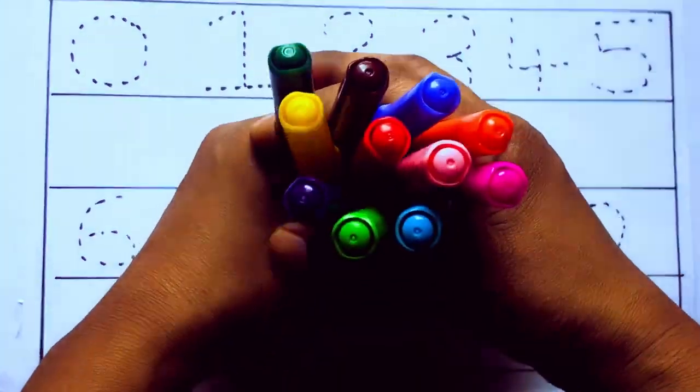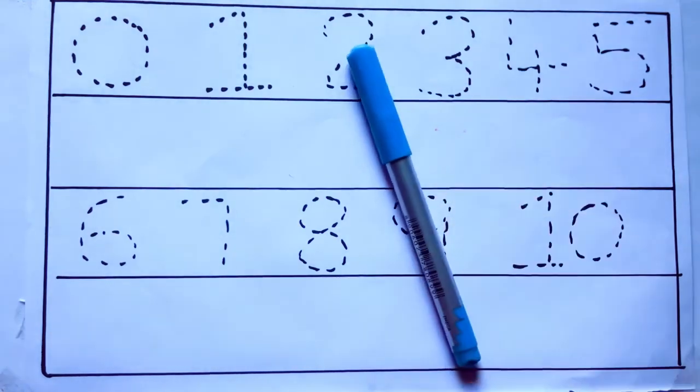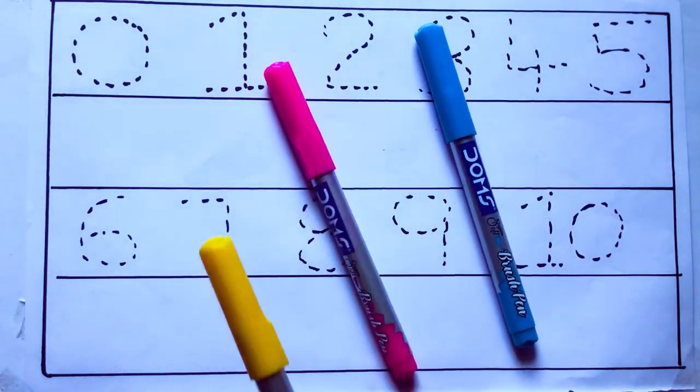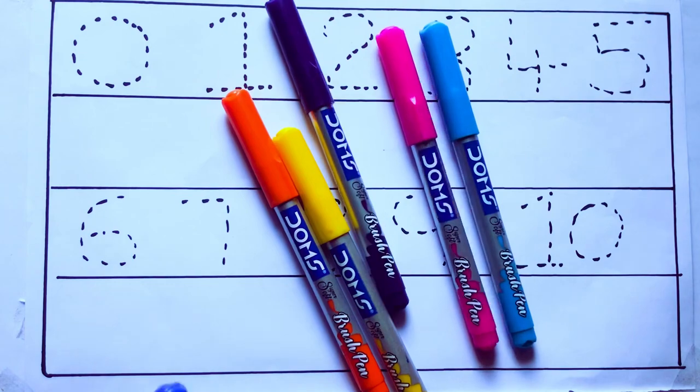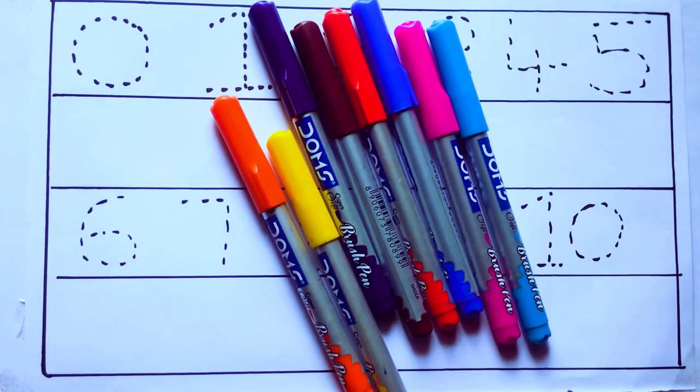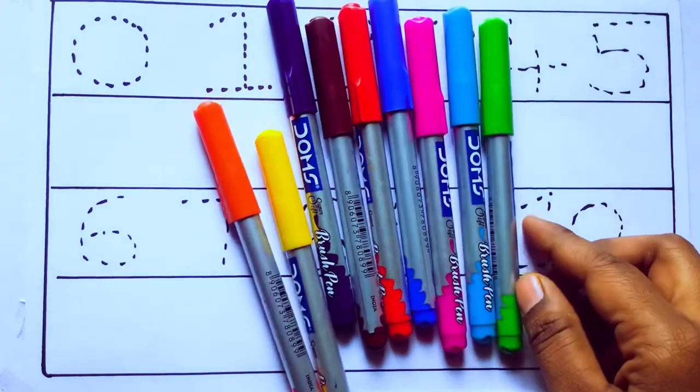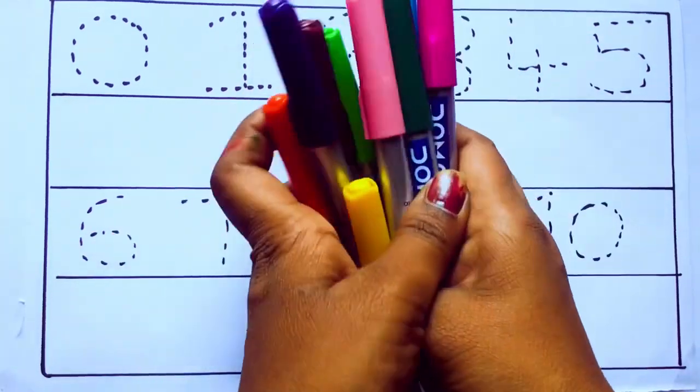Let's learn some colors. These are all the color pencils. Let's learn the names. Sky blue color, pink color, yellow color, orange color, violet color, blue color, brown color, red color, green color, and pink color.